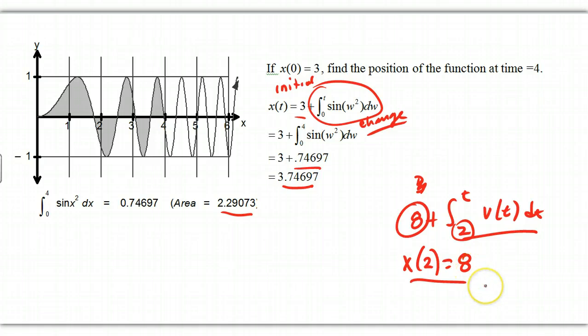So this is a little idea of the difference between displacement and total distance traveled. Total distance traveled, do the integral with the absolute value. With displacement, leave it out. And I call it also change. Thank you very much.